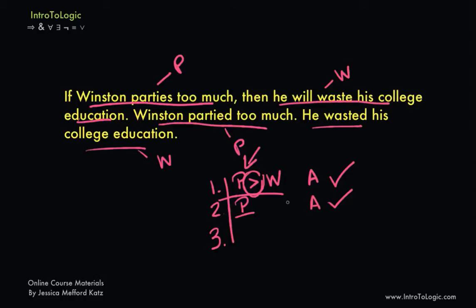So now modus ponens tells us we can derive the consequent of the conditional. So now we can derive W. So we would write the lines we used, which in this case are lines one and two, and the rule of inference we used to derive this new line, line three. And that is MP, which stands for modus ponens.